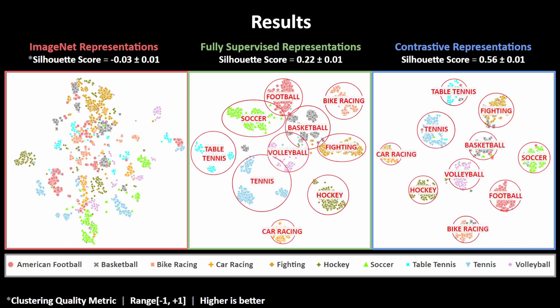The clusters of game genres are much more compact and well separated from those of other genres. Thus, we argue that the contrastive learning framework is best suited for learning general game representations that can ignore differences in visual styling of games and only focus on obtaining the game's content.